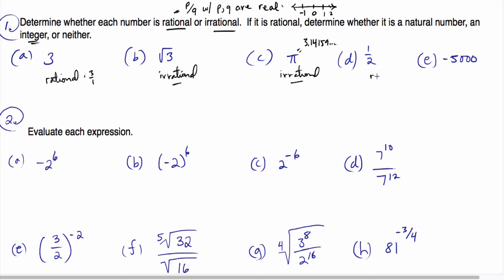One half is rational, and so is negative 5,000. Now, which of these are natural numbers? This is a natural number, and this is the only natural number. The natural numbers start at 1 and go in the positive direction. This number is not an integer, and this one is neither negative nor positive, so therefore it's not natural.